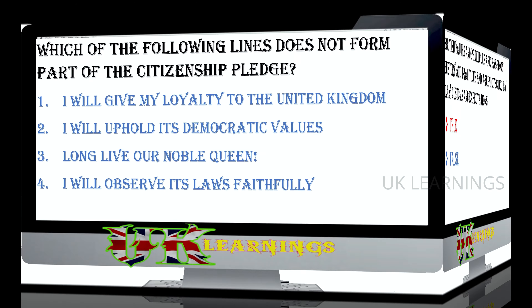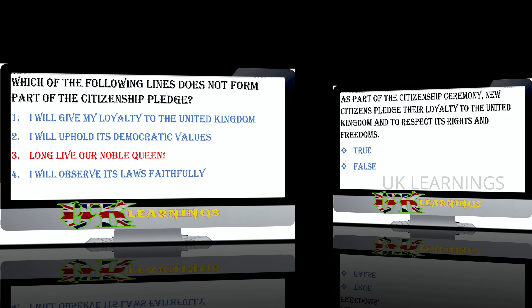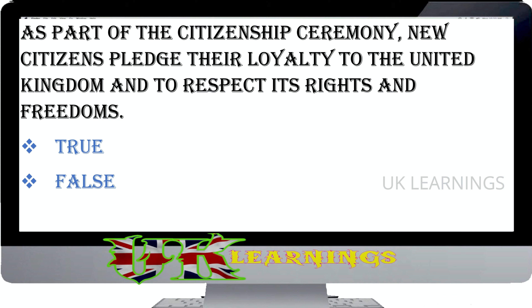Which of the following lines does not form part of the Citizenship Pledge? I will give my loyalty to the United Kingdom, I will uphold its democratic values, long live our noble queen, I will observe its laws faithfully. The correct answer is 'long live our noble queen,' which is the second sentence of the National Anthem of the UK. As part of the Citizenship Ceremony, new citizens pledge their loyalty to the United Kingdom and to respect its rights and freedoms.